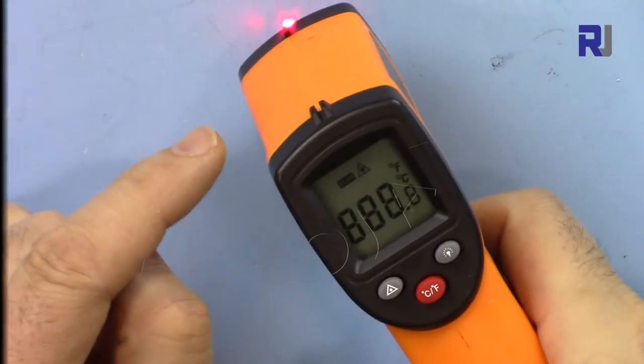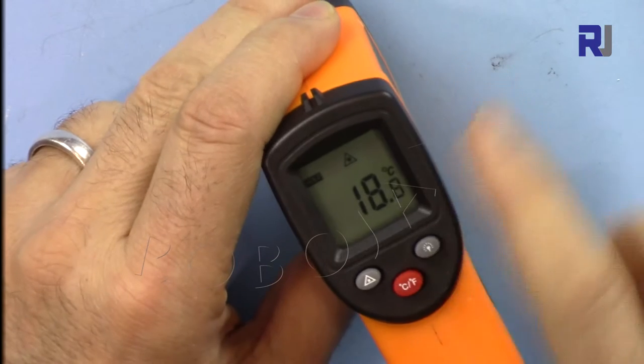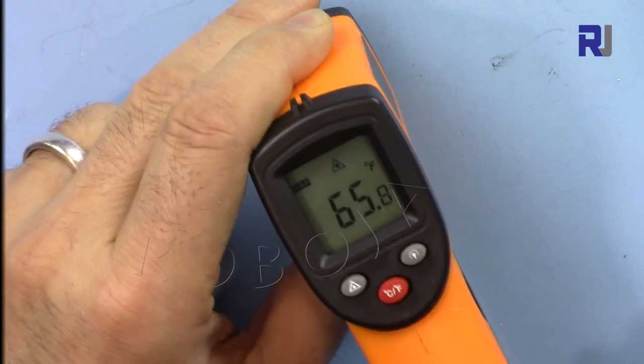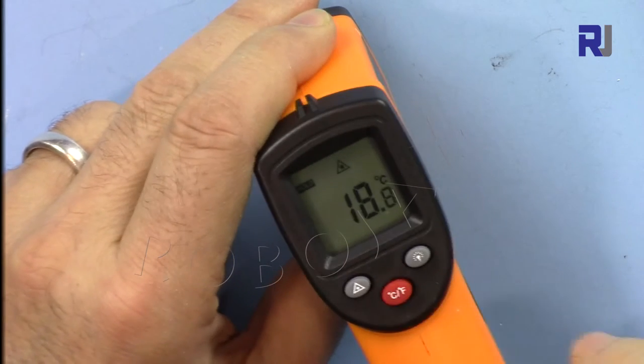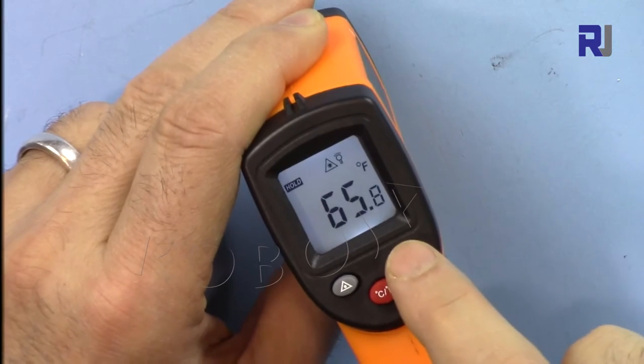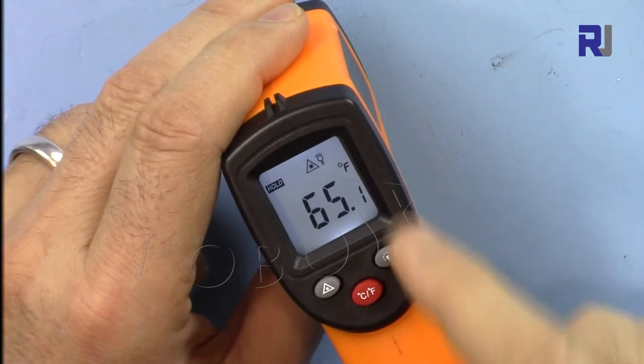For example it shows 18 degrees Celsius. If you want to change it to Fahrenheit just press the red button, that's 65 degrees, so it will convert it for you at any moment. We have two other buttons. This is a backlight, very nice, it will light the back so you can see it.